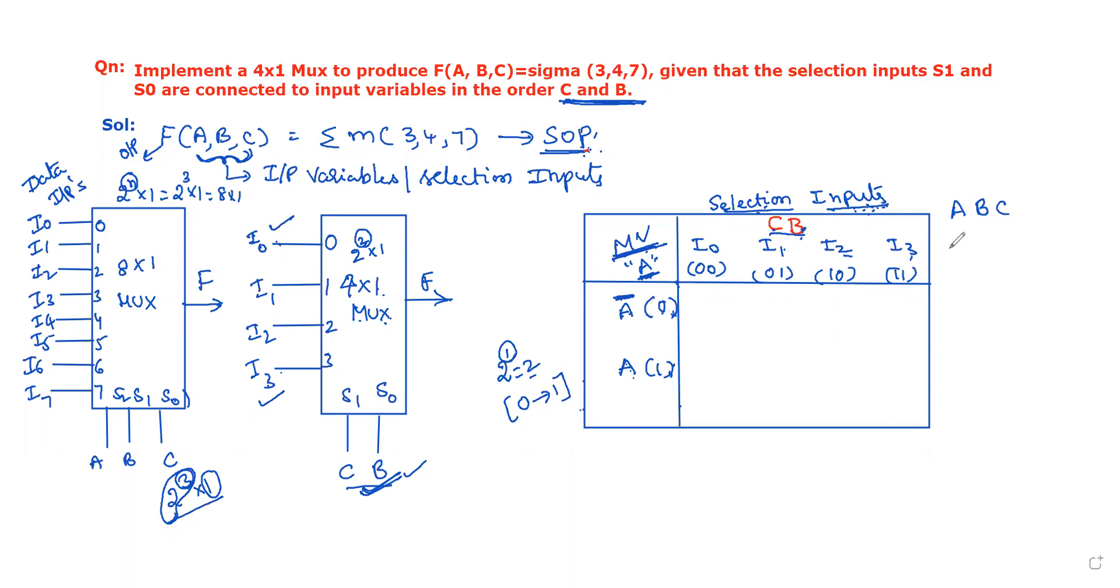Now we write the binary values. When A is 0, B is 0, C is 0, the equivalent decimal value is 0, which is min-term number 0. For A=0, B=1, C=0, the equivalent is 2, so min-term number 2. For 0,0,1 we write B value 0 and C value 1, so its value is 1. For 0,1,1 its value is 3, so we write 3 here.